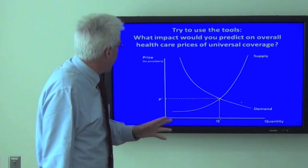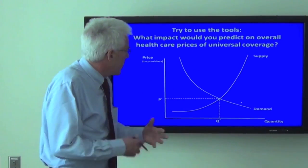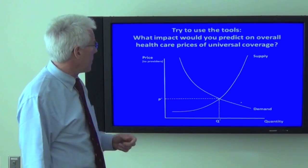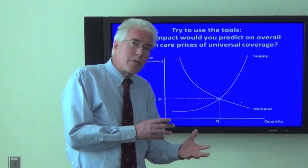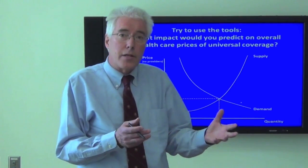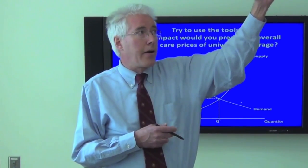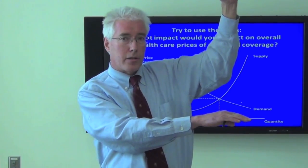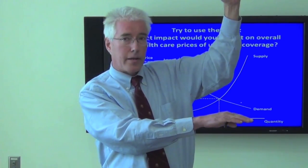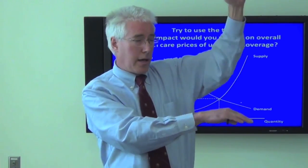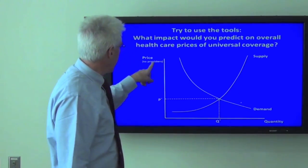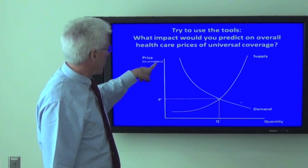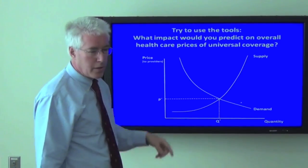This is interesting because you have to think carefully about the insurance market, because what happens with insurance is you get two prices essentially. Suppliers are paid one price and the patients or consumers pay another price, and there's a divergence between those two prices. Here I'm focusing on the price to providers.